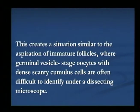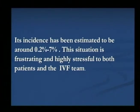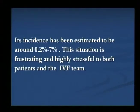But on further careful study under a dissecting microscope, oocytes with dense cumulus cells can be seen — they are very difficult to identify. So before you conclude that there is no oocyte at all, you have to go for a detailed study under a dissecting microscope. The incidence is around 0.7%. It is highly stressful for both the patients and the IVF team where you see follicles correlating with estradiol levels, but come out to tell the patient you were unable to retrieve oocytes.